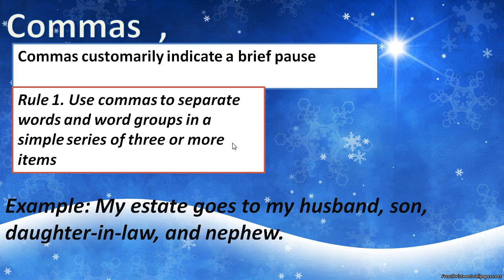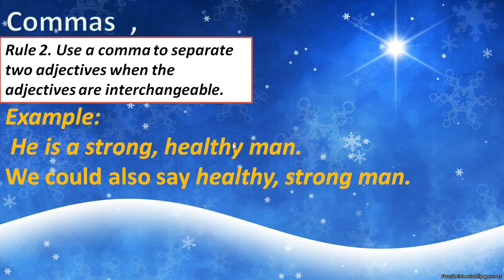Commas. Commas customarily indicate a brief pause. Rule number one: use commas to separate words and word groups in a simple series of three or more items. Example: 'My estate goes to my husband, son, daughter-in-law, and nephew.' Rule number two: use a comma to separate two adjectives when they are interchangeable. For example, you could say 'he's a strong, healthy man' or 'he's a healthy, strong man.'